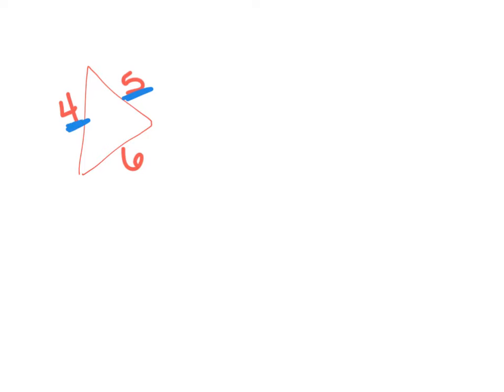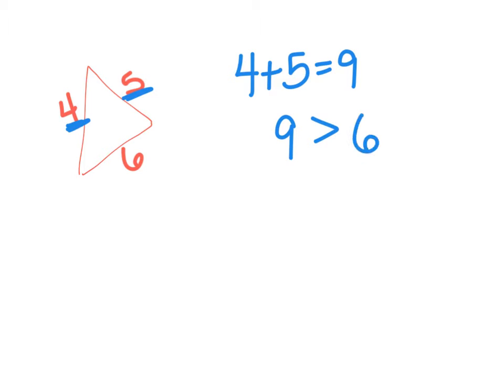So I look here and four and five are my two smaller sides, so I will add four plus five — that equals nine, and nine is bigger than the third side, six. So this will make a triangle.